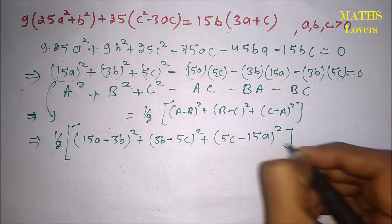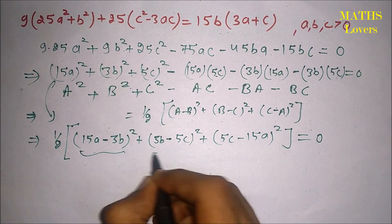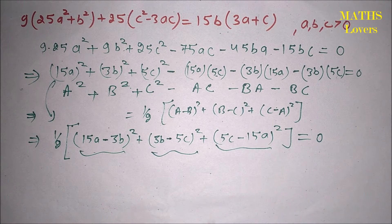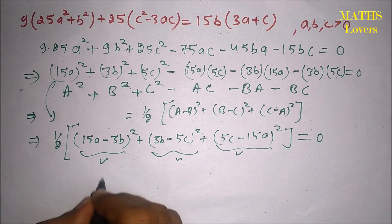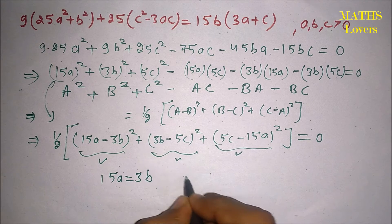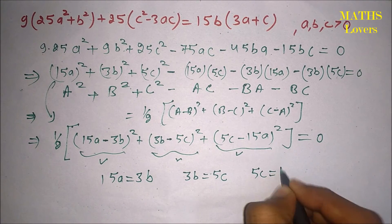that will be equal to 0. So this is positive, this is also positive, and this is positive, so it can be 0 only in one condition when all three get 0. So we can write 15a equal to 3b from this, 3b equal to 5c, and from this 5c equal to 15a